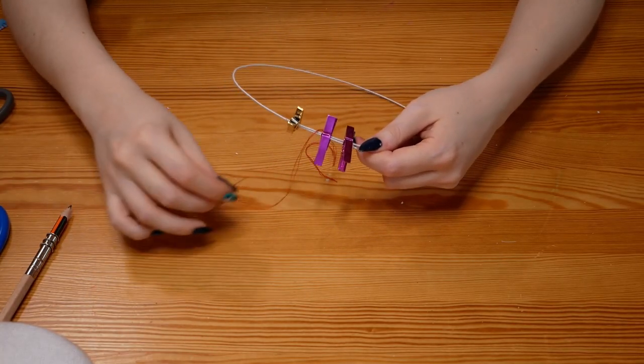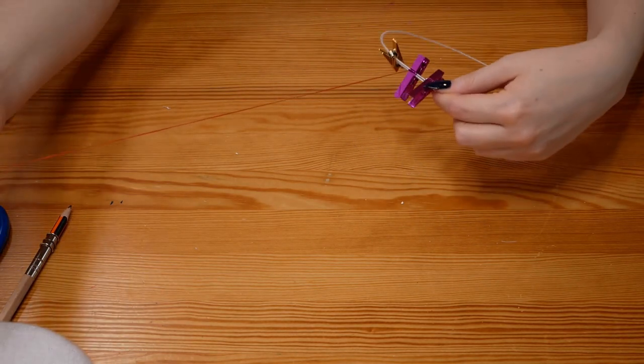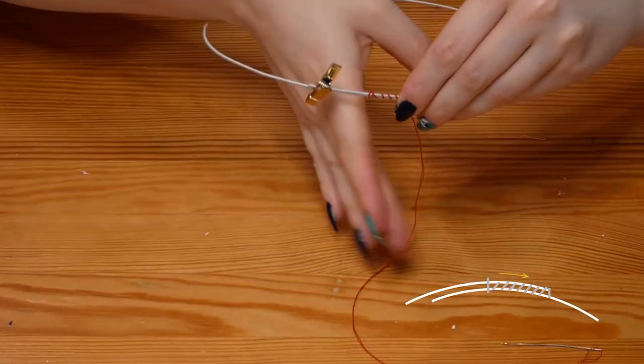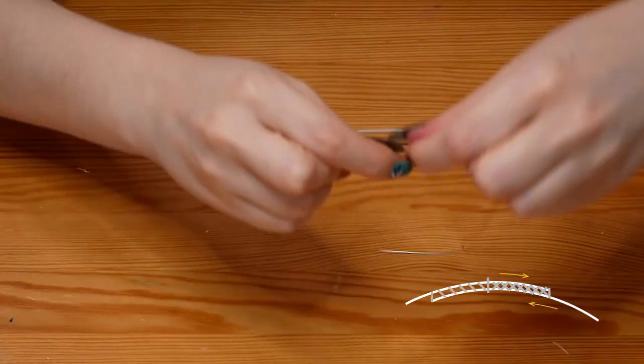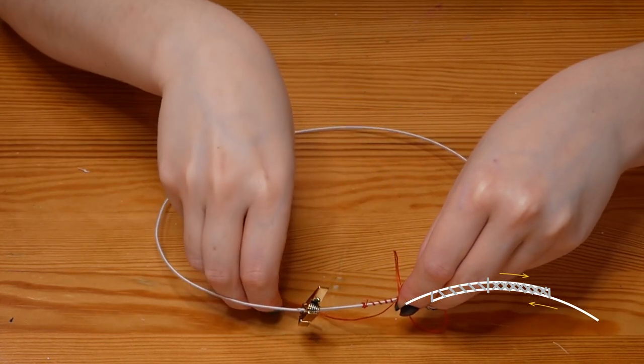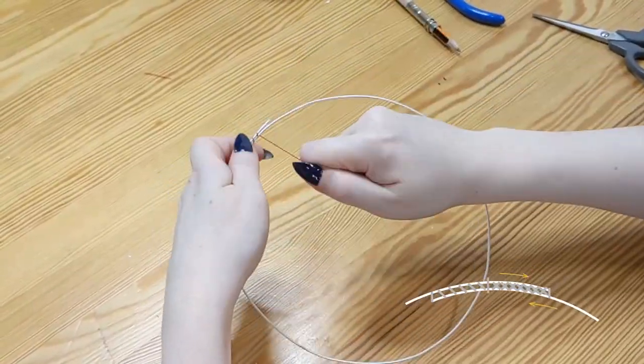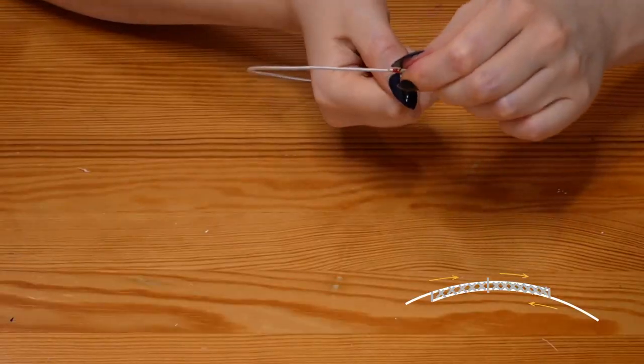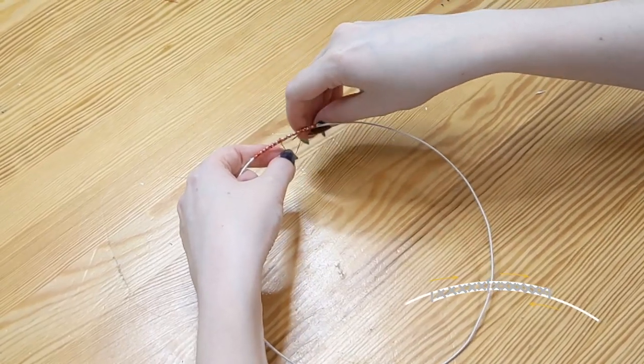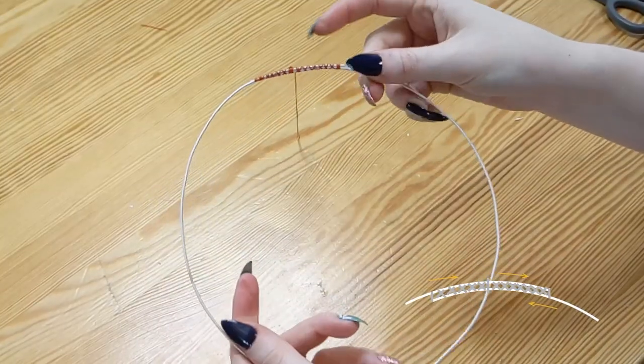Sew the wires together, starting in the middle of the join. Because I'm using a double thread, I loop the thread through itself to secure the middle of the join. Then I wrap the threads around the wires going in one direction. Once I get to the end of the join, I loop it over a couple of times to secure that end, and work my way back towards and then past the middle. Now that I'm back where I started, I can secure the thread with more loops and several knots. The threads should make a pretty cross pattern over the wires.